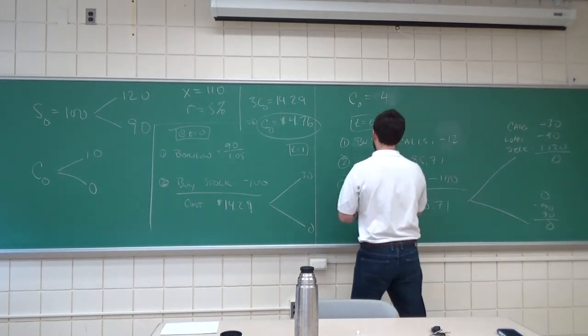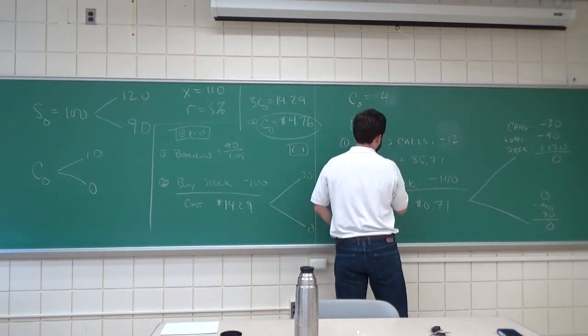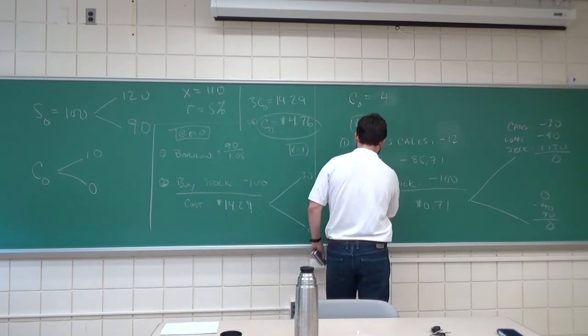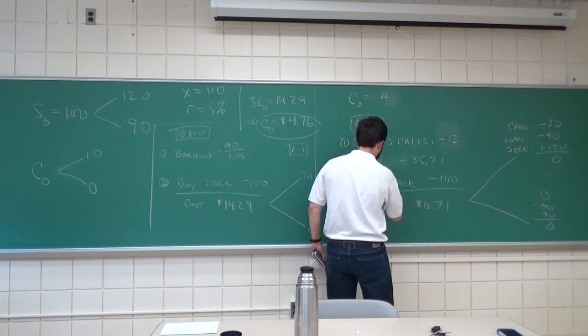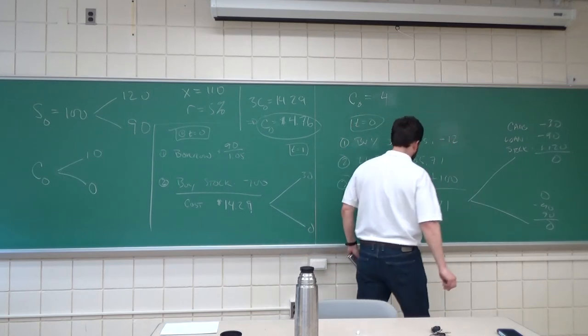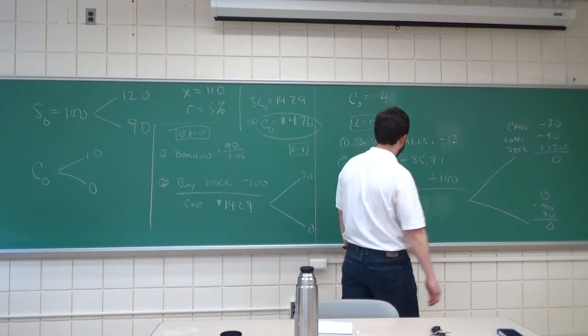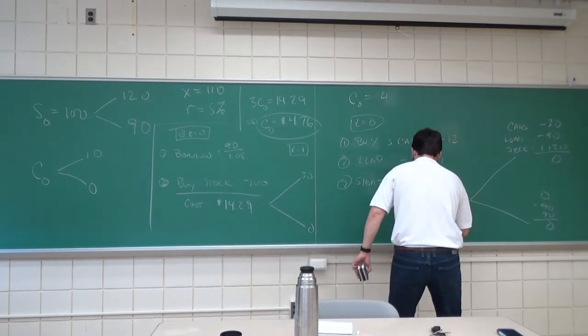Of course, we're going to buy three calls for $12, but that's a cash outflow at time one. We want to lend, so this is going to be also a cash outflow. And we want to short. So, this is going to be a cash inflow. So, this nets to $2.29.